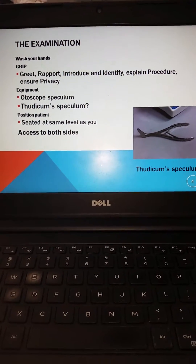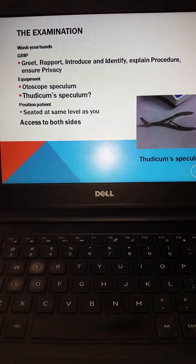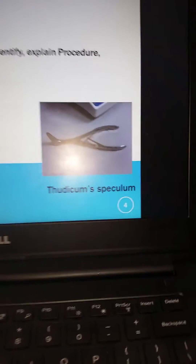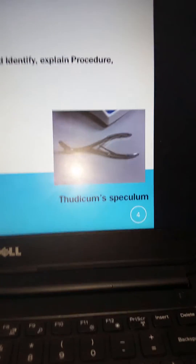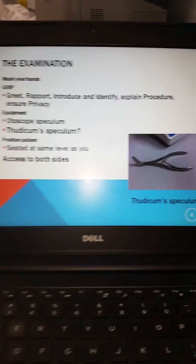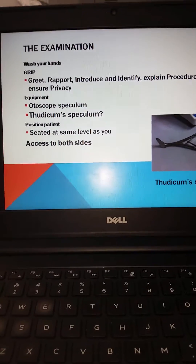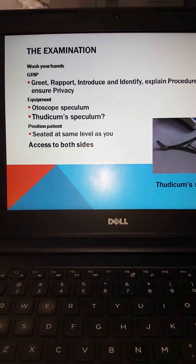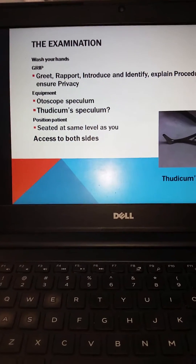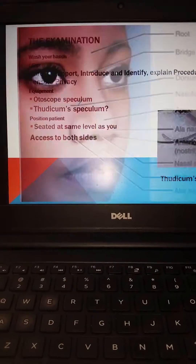You're going to use an otoscope for your examination. You can also use a Thudichum speculum, which is visualized here — there's a photo of it, and we'll demonstrate how to use it for getting a good view of the inside of the nares. Make sure that the patient is seated at the same level as you or slightly higher to make the exam easier, and make sure you're examining both sides.